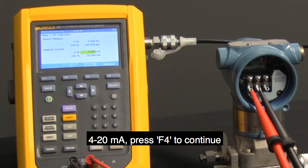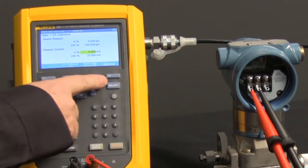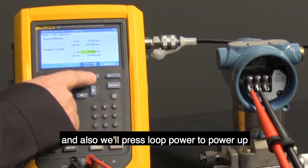4 to 20 milliamp, press F4 to continue, and then also we'll press Loop Power to power up.